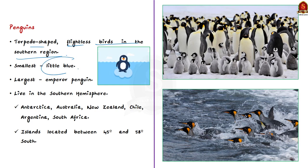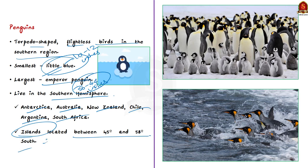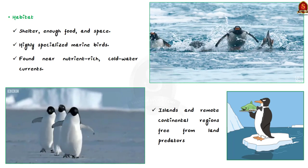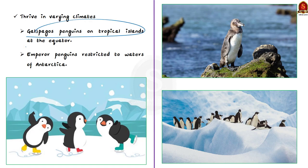Penguins are torpedo-shaped flightless birds that live in the southern regions of the earth. The smallest penguin species is the Little Blue Penguin, which grows to 10 to 12 inches. The largest is the Emperor Penguin, growing to 36 to 44 inches. All penguins live in the Southern Hemisphere. It is a common myth that they all live in Antarctica — they can also live in Australia, New Zealand, Chile, Argentina, South Africa, and several islands between latitudes 45° and 58° South.